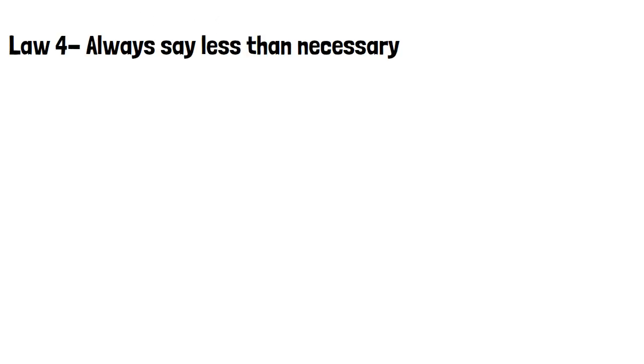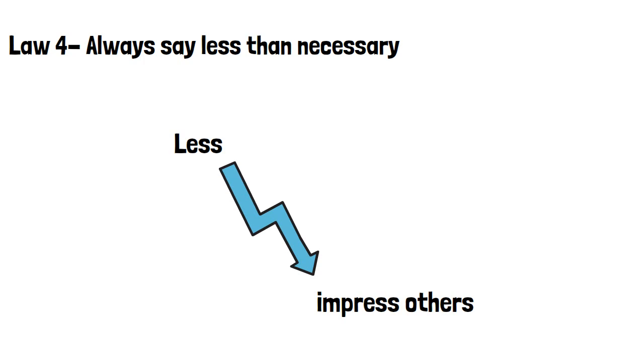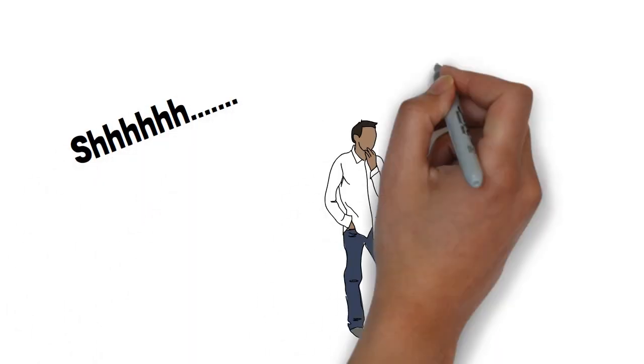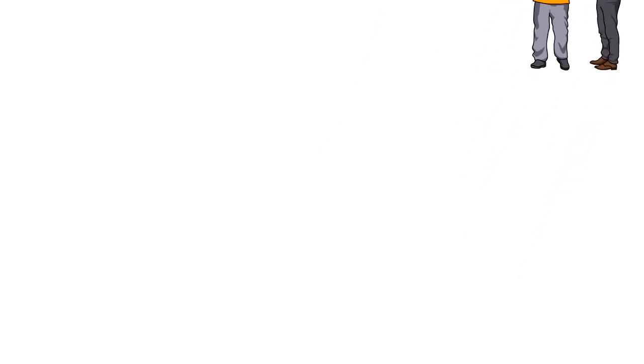Law 4, always say less than necessary. By saying less, powerful people impress others. The more you say, the more likely it is that you will end up saying something stupid. Silence makes people feel uncomfortable because people are constantly trying to work out what others are thinking. By controlling what you say, you can effectively handle great power. After all, they are likely to fill in the silence as you leave, revealing more information about their own intentions and weaknesses.